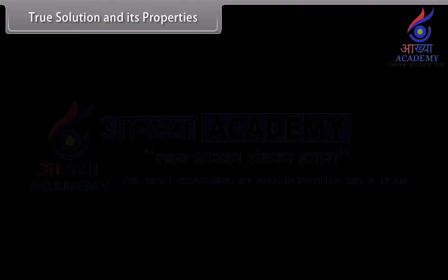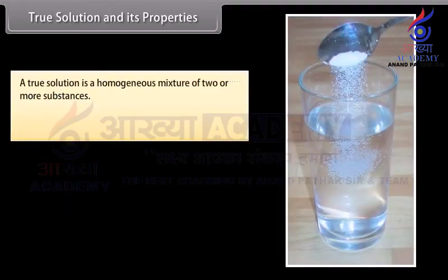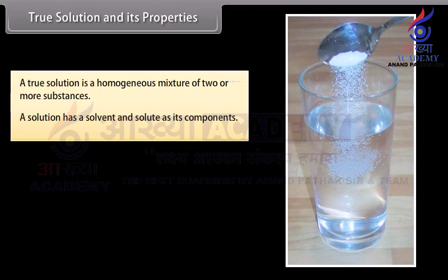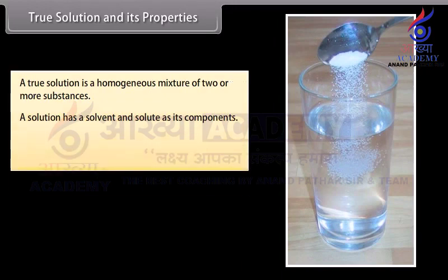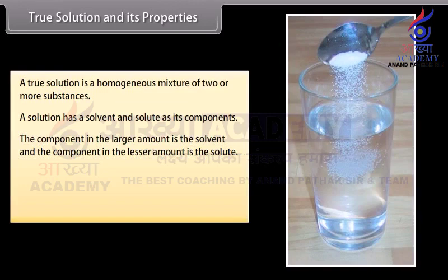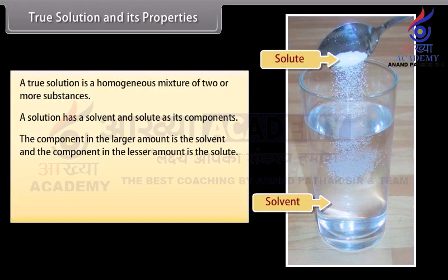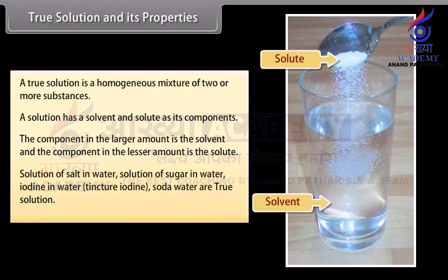True Solution and its Properties. A true solution is a homogeneous mixture of two or more substances. A solution has a solvent and a solute as its components. The component in the larger amount is the solvent, and the component in the lesser amount is the solute. Examples of true solutions include solution of salt in water, sugar in water, iodine in water (tincture iodine), and soda water.